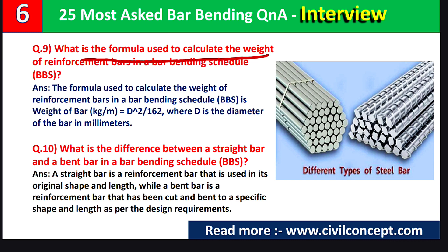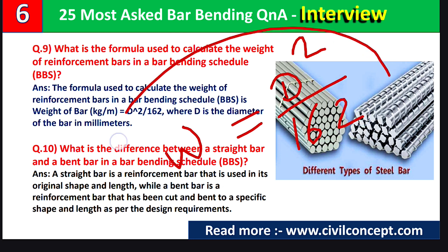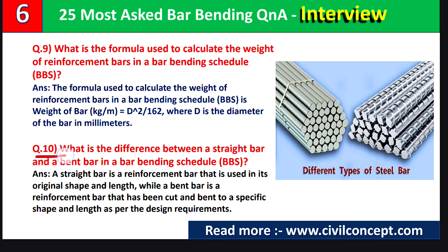Question number nine: what is the formula used to calculate the weight of a reinforcement bar in a bar bending schedule? The formula is: weight per meter (kg/m) = D² / 162, where D is the diameter of the bar in millimeters. Whenever we have to calculate the weight of a steel bar, we use this formula — D squared divided by 162 — which gives us the weight in kg per meter length.